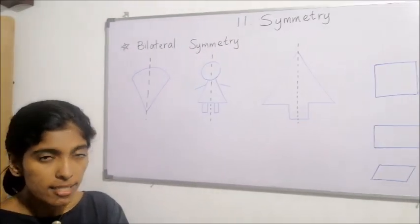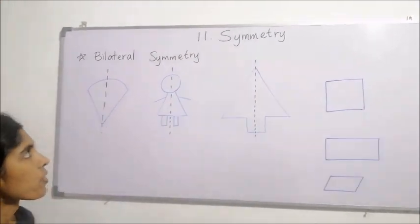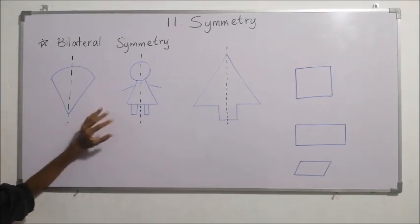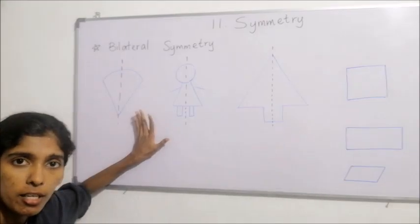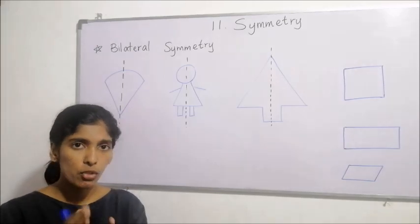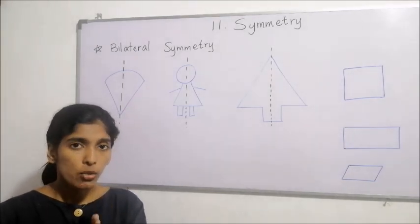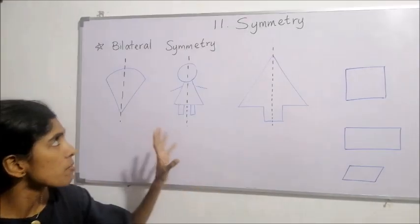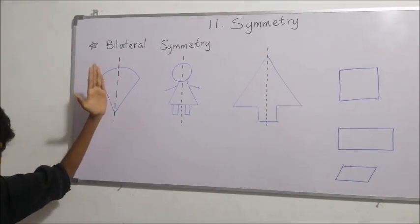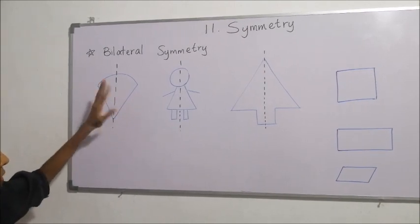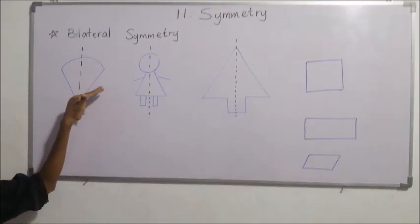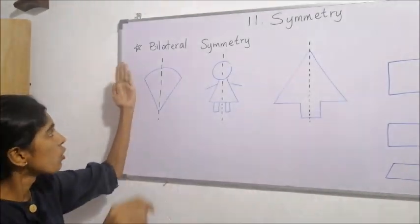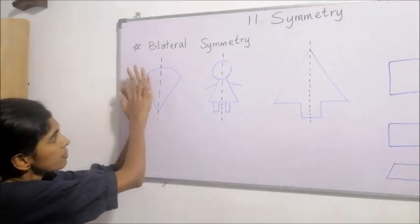Hello children, today our lesson is symmetry — lesson number 11. Under this lesson, firstly we will recall bilateral symmetry, which you learned about last year. If we can fold a plane figure along a straight line to get two identical parts that coincide with each other, then that figure is called a bilateral symmetric figure. After folding through this line, we get two equal parts that lie on each other completely, without any overlaps.